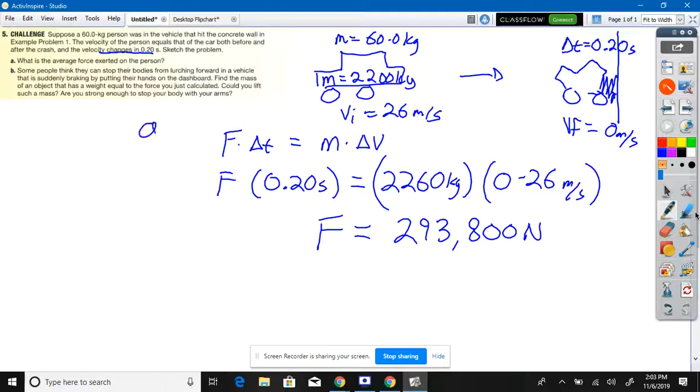Well, let's see. In that instant, how much would that person weigh? So we solved A. Question B says some people think they can stop their bodies from lurching forward in a vehicle that is suddenly braking by putting their hands out on the dashboard. Well, they don't think that, that's just instinctive behavior. Find the mass of the object that has a weight equal to the force you must calculate. Can you lift such a mass? Are you strong enough to stop your body with your arm? So the question is, Greeny, what kind of push-ups would we be doing right there? Well, how do we find that? Well, now that's the force of your weight. That's mass times gravity. Calculate your mass, divide that by gravity, calculate the kilograms that would feel like that. So that would be the apparent mass of 29,979 kilograms.